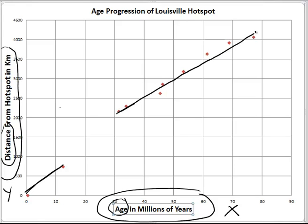I have placed my best-fit line for this portion of the track. The slope of the line — rise over run — represents distance divided by time, in other words, the velocity of the plate as it passes over the hot spot.